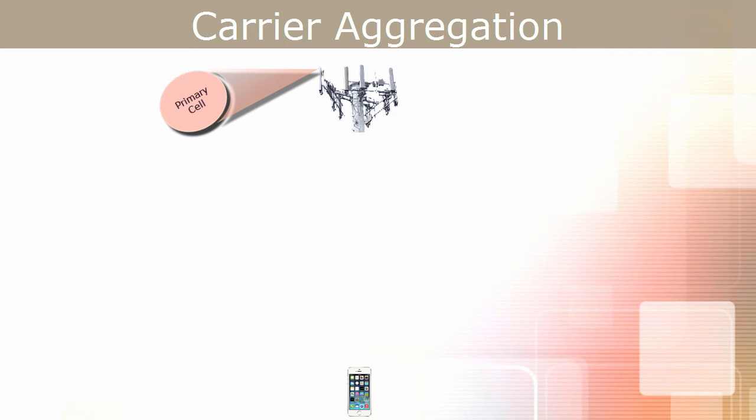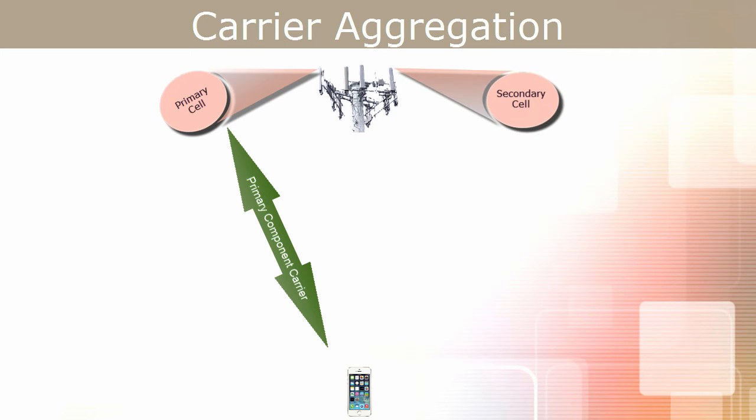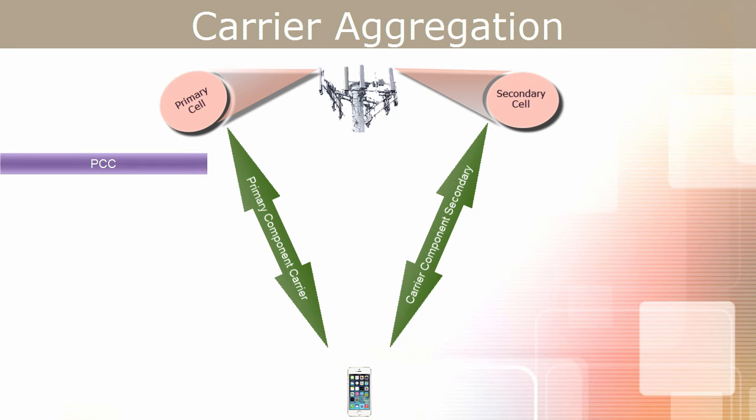When there is no CA, the UE receives and transmits data on a single carrier. This carrier is called the primary component carrier, and the corresponding cell is called the primary serving cell. In case of carrier aggregation, one or more component carriers are aggregated with the primary component carrier in order to support wider transmission bandwidth. The primary component carrier from the primary serving cell always remains there.